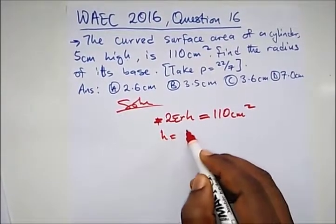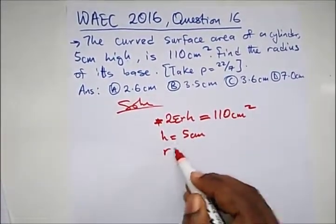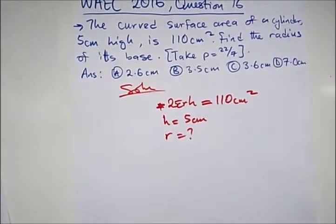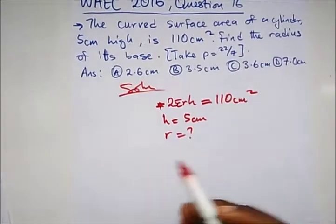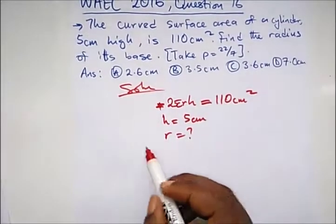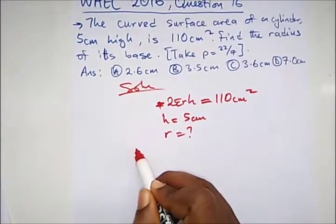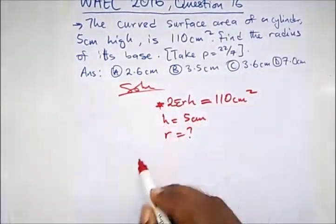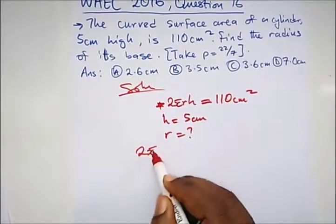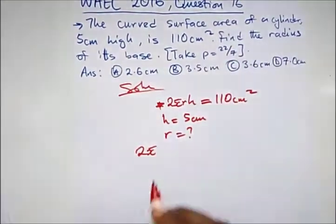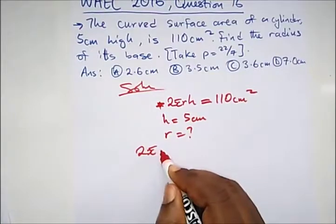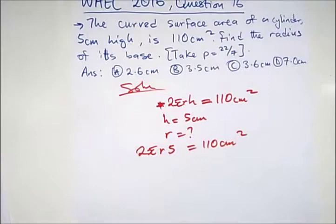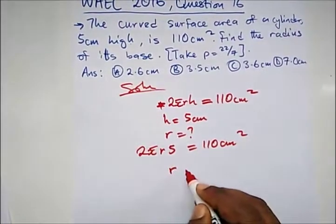Its height is five centimeters. It said find the radius, so we're looking for r. Here it's just as simple as change of subject formula, which there's also a video on you can watch. All we need to do is put the value of five into the equation, which is h. H equals five, so we have 2πrh, and they said take π as 22 over 7.